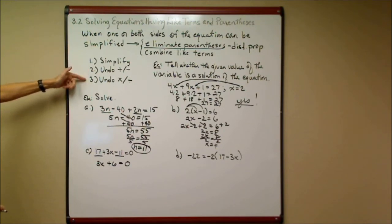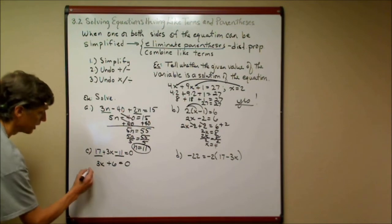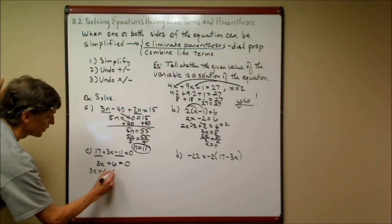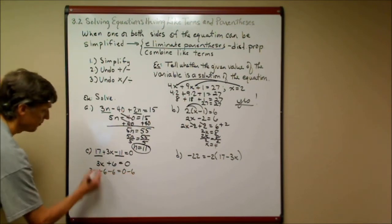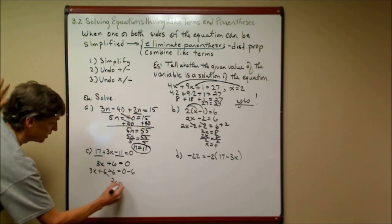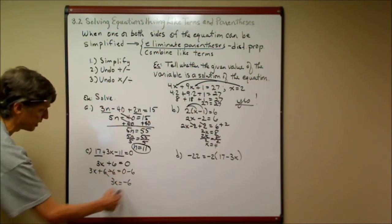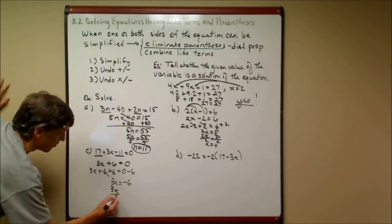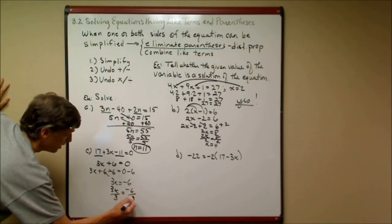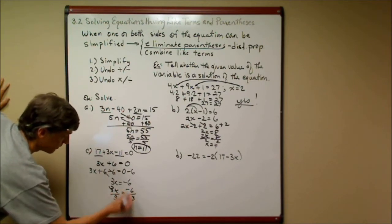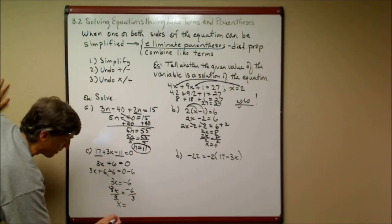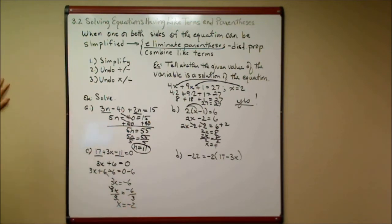Now I'm going to go back down here. I've simplified. I'm going to go to these steps. I'm going to undo adding, subtracting. I'm going to do multiplying, dividing. I'm going to get rid of the plus 6. I'm going to subtract 6 from both sides. I get 3x is equal to negative 6. 0 minus 6 is negative 6. And I finish it off by dividing both sides, in this case by 3. Negative 6 divided by 3. Negative divided by positive is negative. It goes in twice. x equals negative 2.